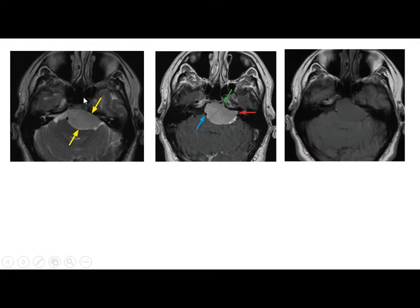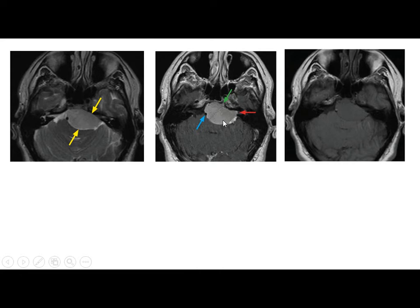On T2 imaging, there is a well-defined homogeneous mass starting from the prepontine cistern and extending into the left CP angle, causing mass effect and deviation of the basilar artery. T1 without contrast shows an iso-intense mass, while T1 with contrast shows an enhancing mass — without widening of the porus acousticus. The basilar artery shows deviation due to mass effect.